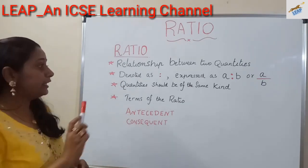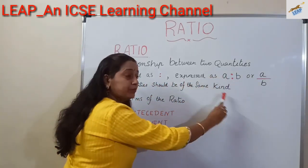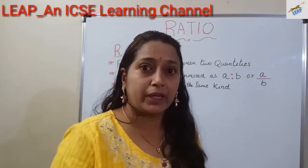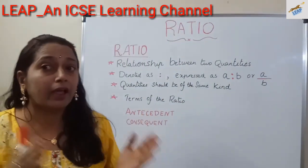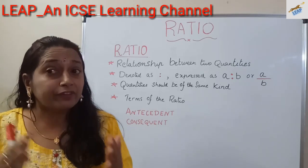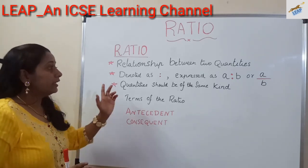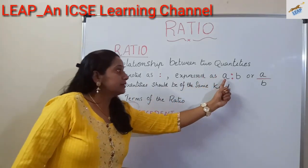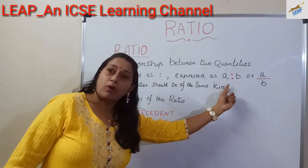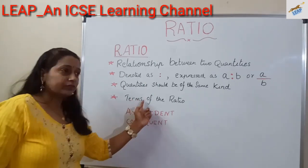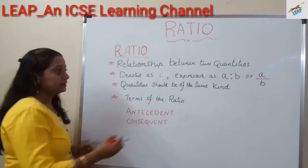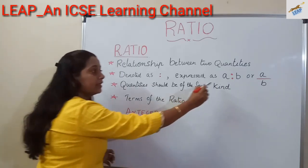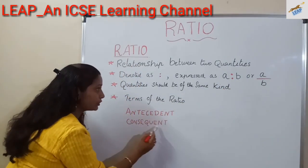Always remember that these two quantities should be of the same kind. That is, we can compare the number of balloons or height of students, but we cannot compare 5 men and 3 horses because they are different types. In ratios, the quantities should be of the same kind. These quantities A and B are known as terms of the ratio. The first quantity A is known as the first term or antecedent, and the second quantity is known as the second term or consequent.